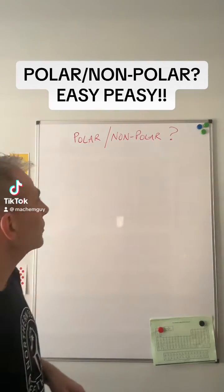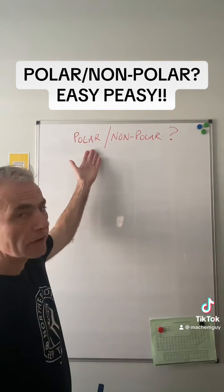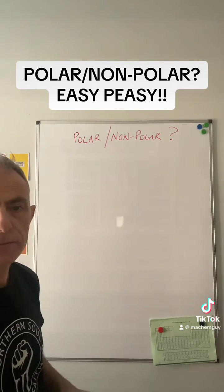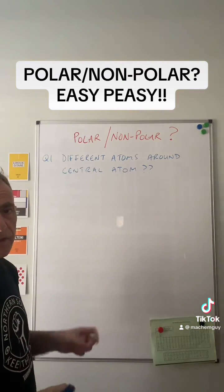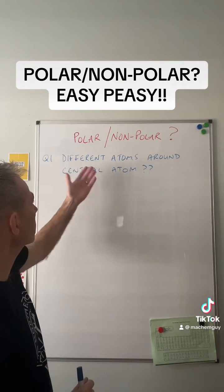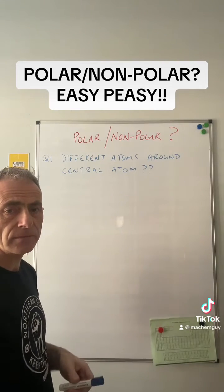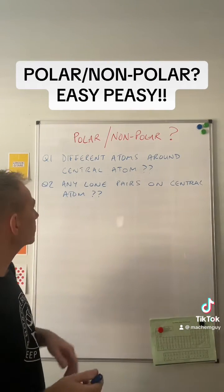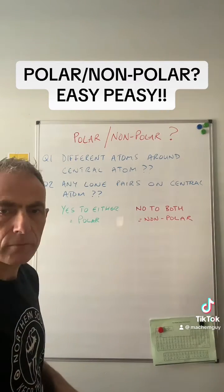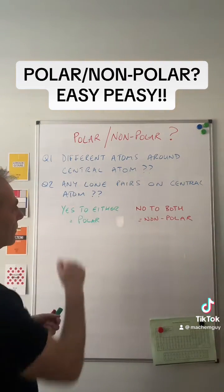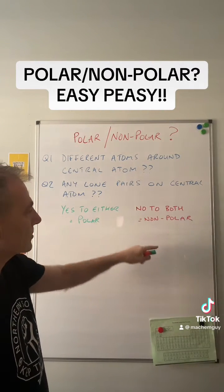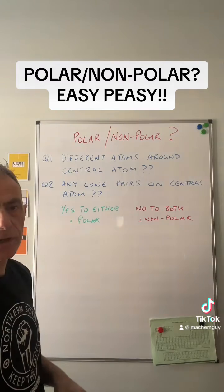Just thought I'd make a quick video to show you how you can tell very easily if a molecule is polar or non-polar. There are two very simple questions you've got to ask yourself about the molecule. The first one is: are there any different atoms around the central atom? And the other question is: are there any lone pairs on that central atom? If the answer is yes to either of those two questions, it's going to be a polar molecule. And if the answer is no to both, it's a non-polar molecule.